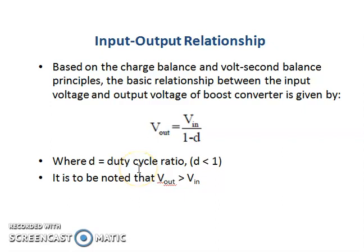And this is derived based on the principle of charge balance and volt balance as earlier mentioned. So the value of D, which is the duty cycle ratio, ranges between 0 and 1 and D is always less than 1. Of course, when D is equal to 0, V_out is equal to V_in. And there is no definition for V_in over 0 if D is equal to 1, and that makes this undefined. Now, it is to be noted by the function of boost converter that V_out will always be greater than V_in. That is what the job that the boost converter is supposed to do.